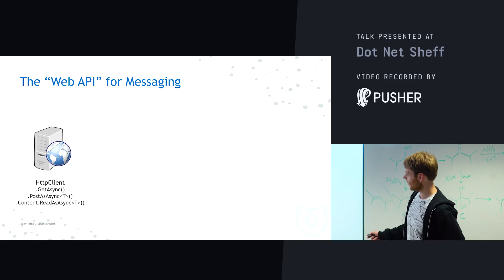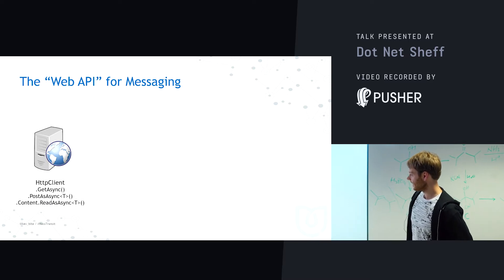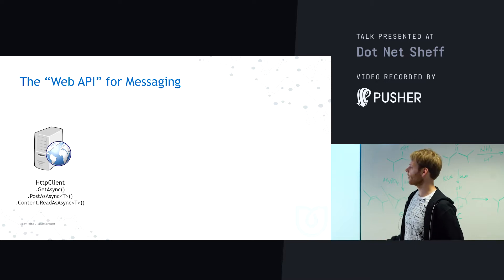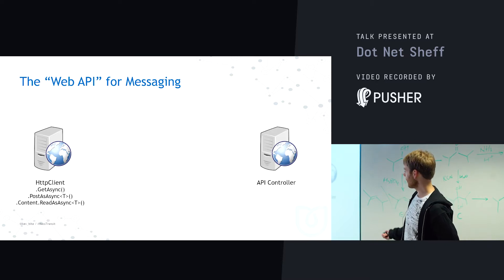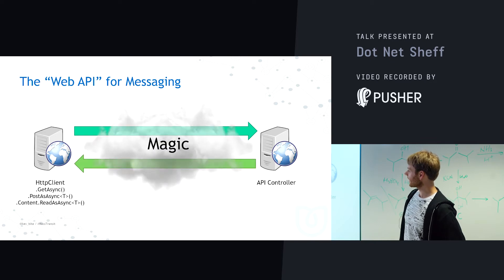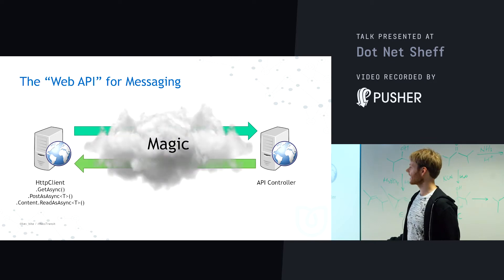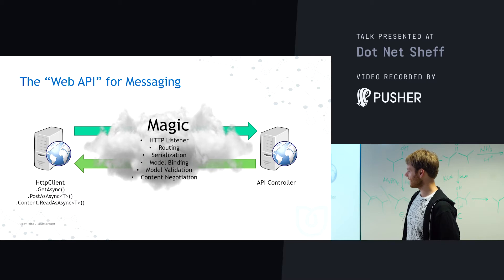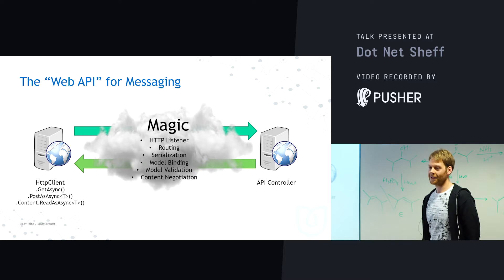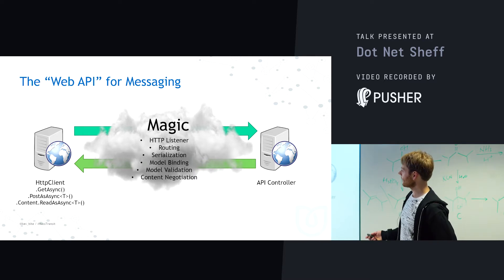With Web API, we've got the Web API client — our HTTP client — and we have our PostAsync methods with generic parameters, and then ReadAsync with generic parameters, so we don't really care about what's happening under the hood. We have API controllers on the other side, passing C# models in, and we don't care what's between. We get a request in, a response back, and there's magic in between — HTTP listeners, routing, serialization, content negotiation, model binding, validation — that's how Web API works.